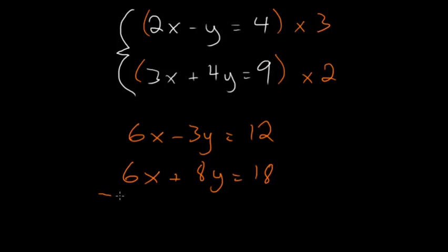Now since the coefficients on x are the same, we can subtract the second equation from the first and that way we'll have 6x minus 6x which is 0. And now we'll only be left with an equation involving y which we can solve for.